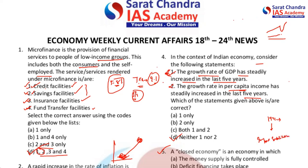India followed more or less a closed economy model but not completely. The closed economy is something like the present North Korea — it doesn't import most of the time and it doesn't export because of sanctions. No one is ready to buy, and no one is ready to send anything to North Korea either because of sanctions.